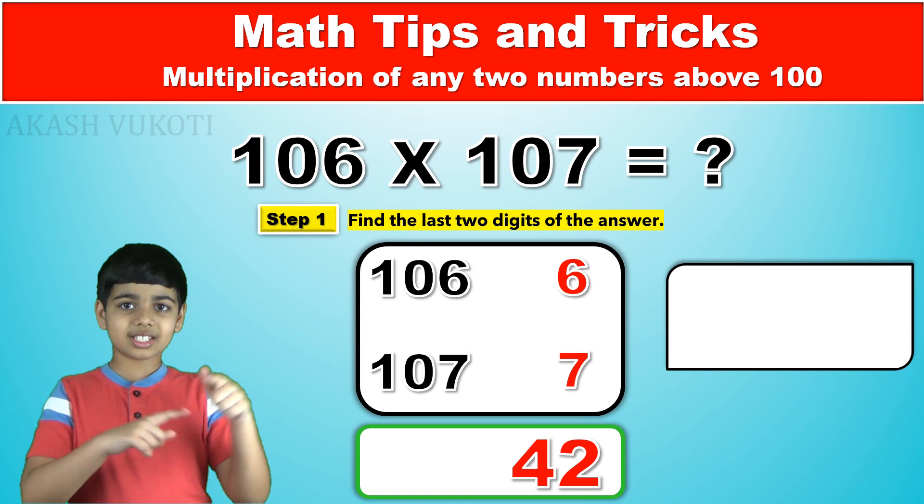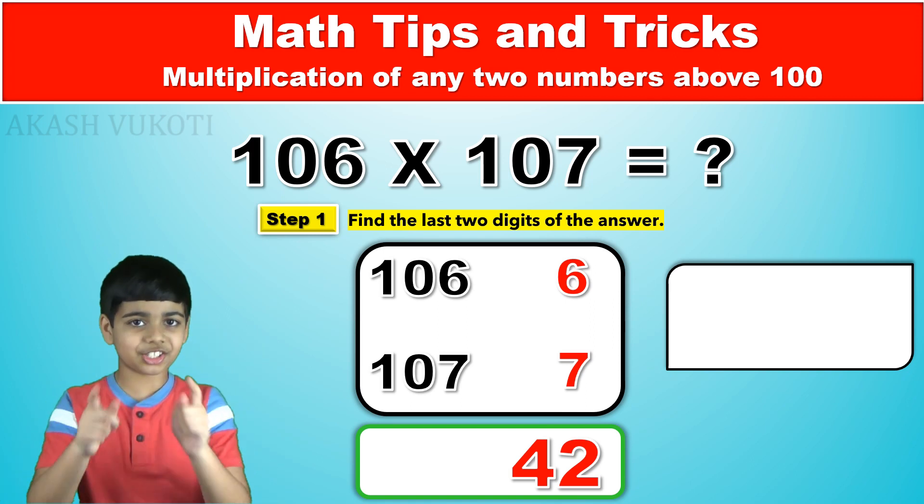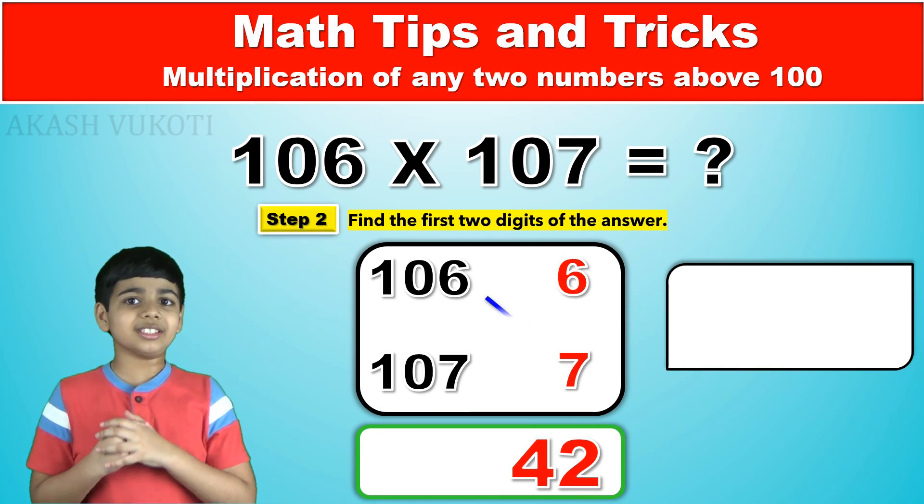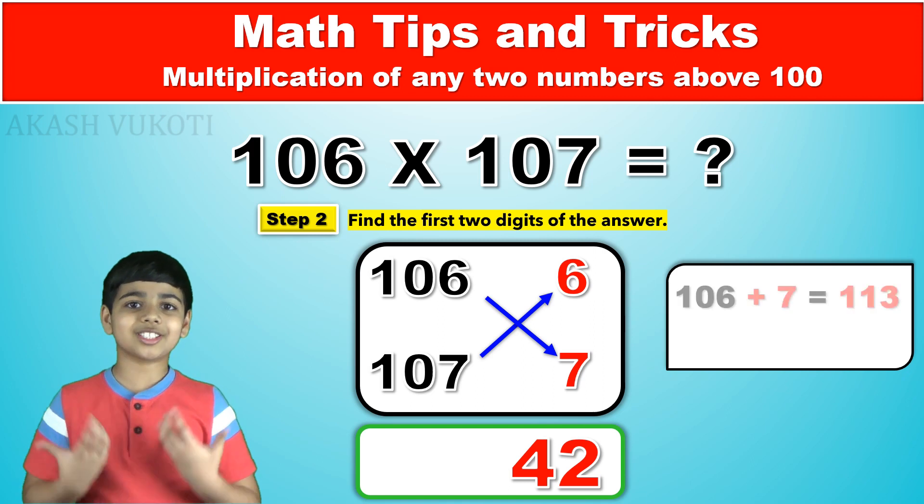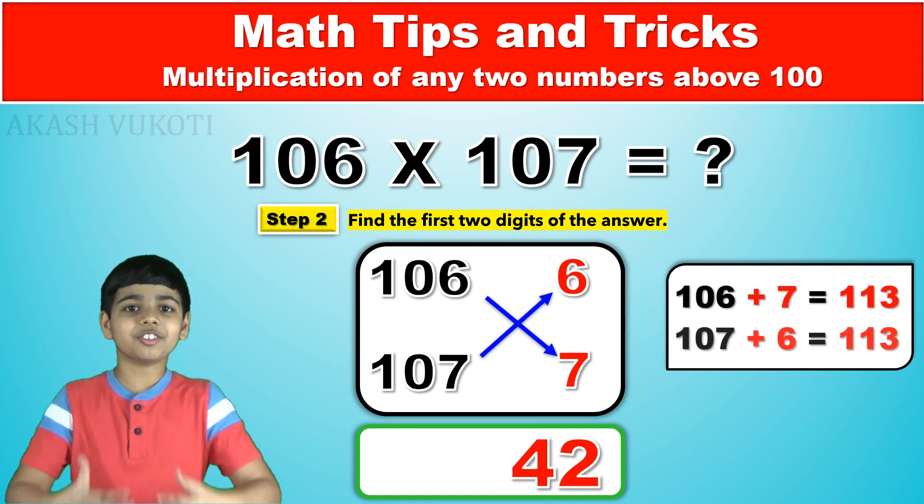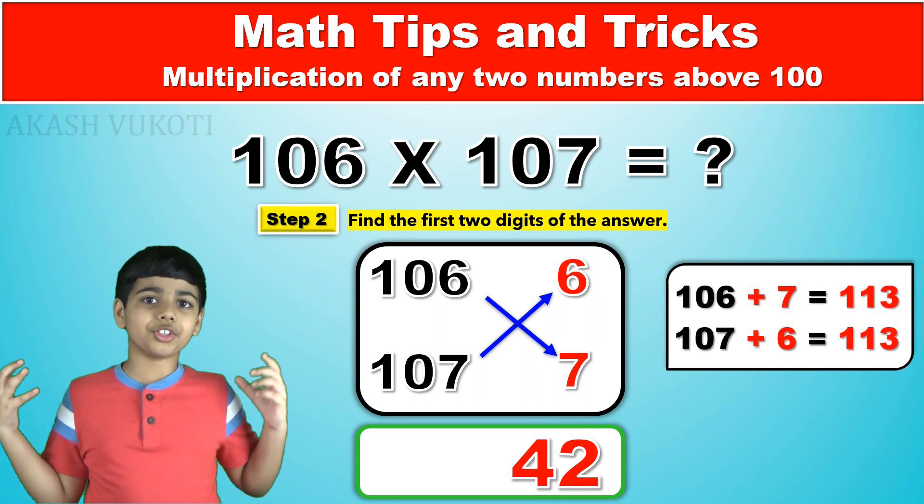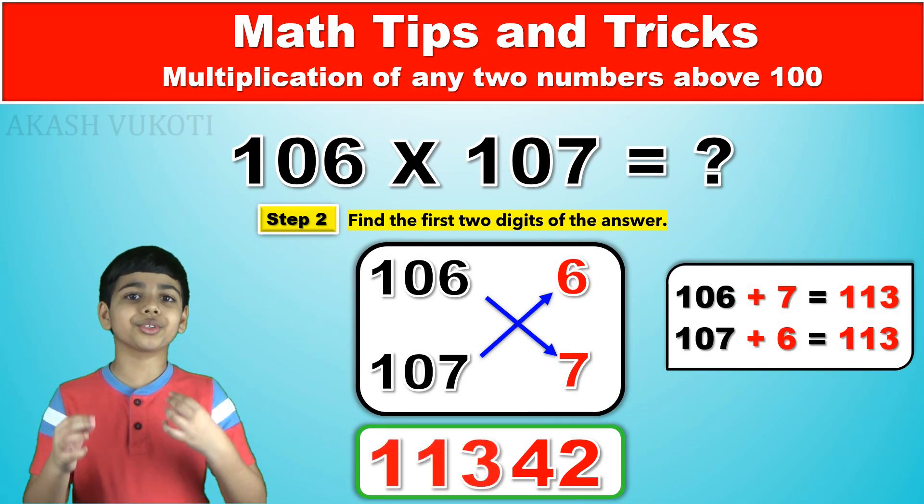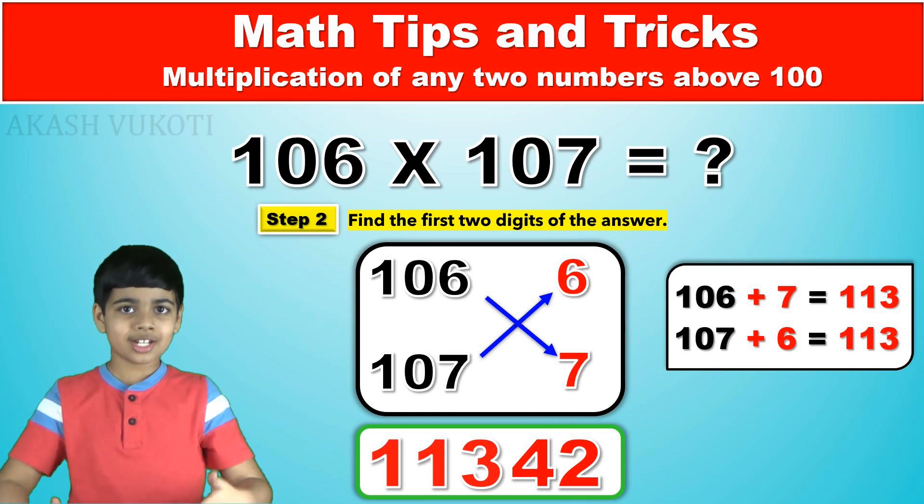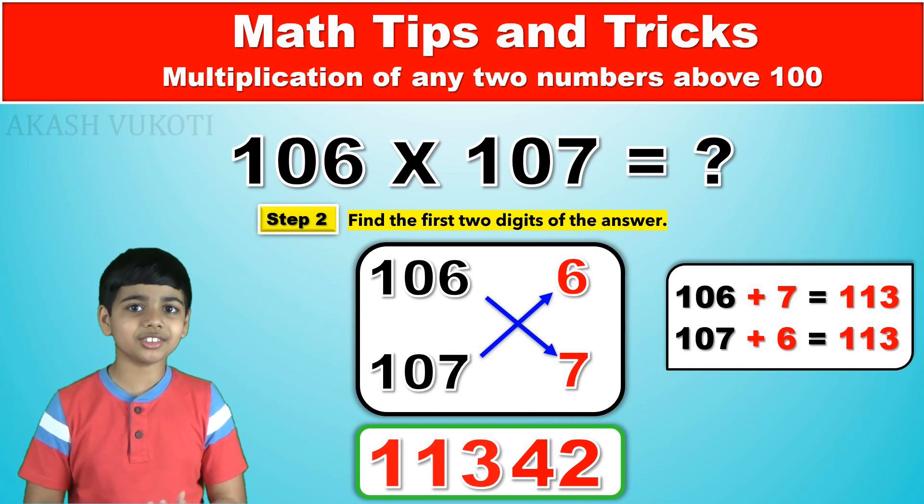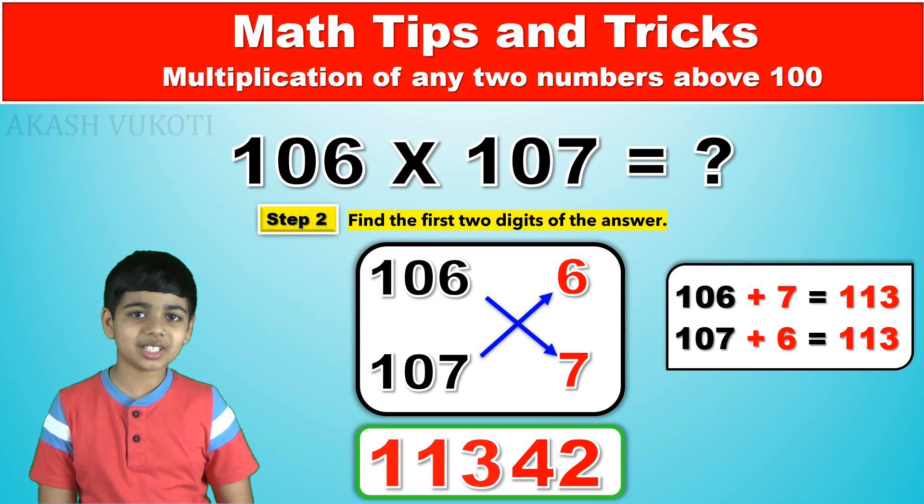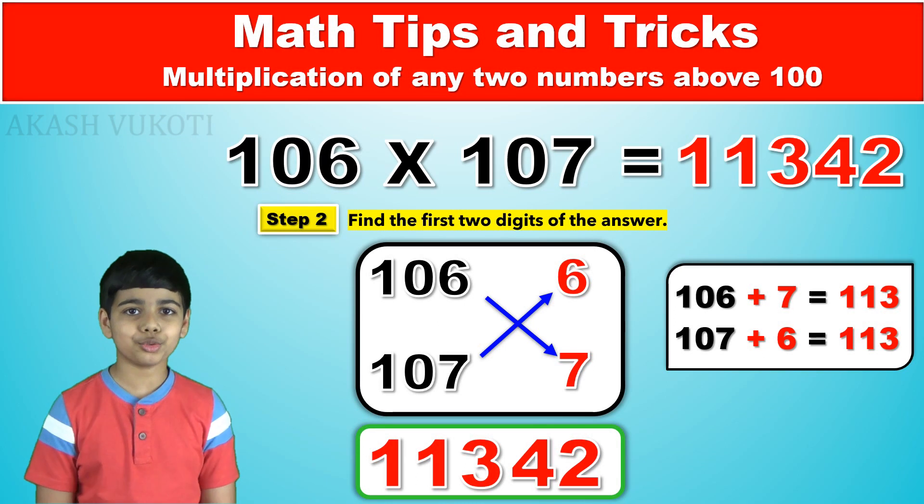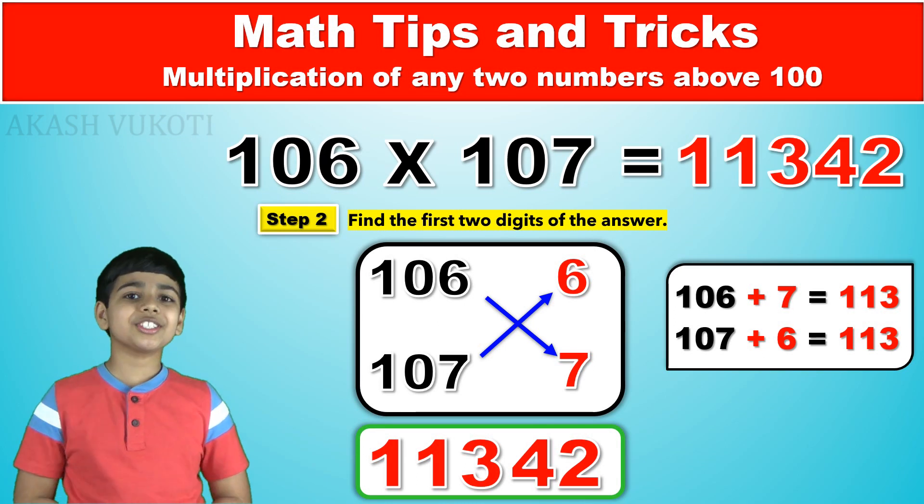Then, we cross-add these two. Remember, the X shape from the opposite numbers in the equation. And since 106 plus 7 and 107 plus 6 are both 113, the first three digits of our answer is 113. And as such, the answer finally is 11,342.